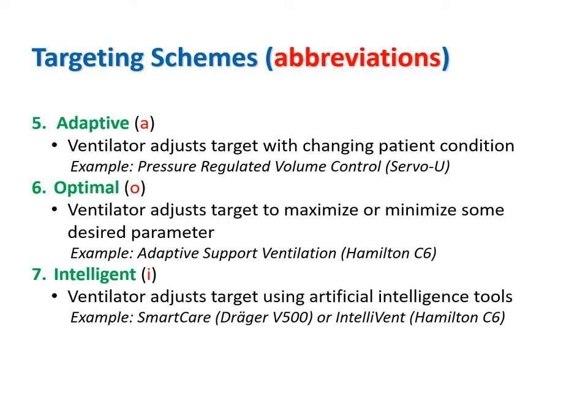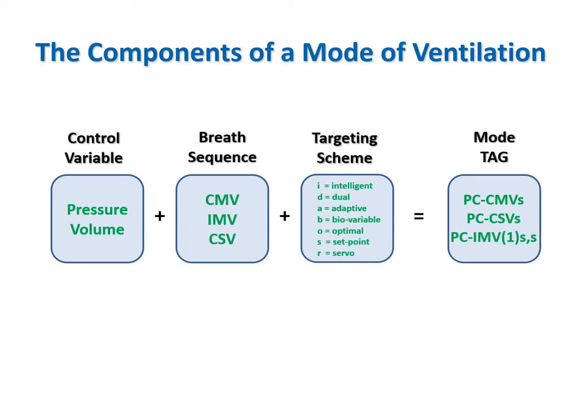Intelligent targeting schemes use the tools of artificial intelligence such as mathematical models, fuzzy logic, rule-based expert systems, and artificial neural networks. The most advanced form is called IntelliVent, which can automatically select tidal volume, frequency, PEEP, and FiO2 while enforcing rules for lung protective ventilation.